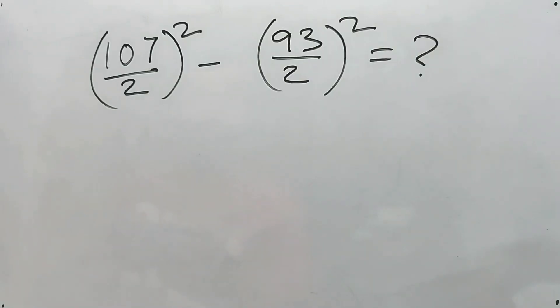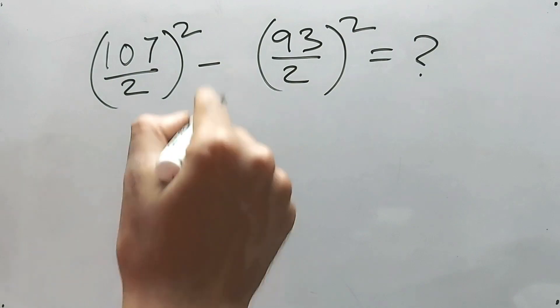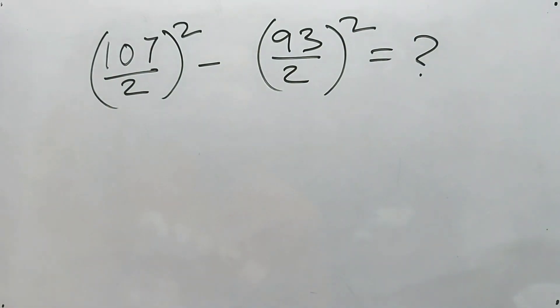Hi guys, this is Arindam. You're watching Brain Development. So, (107/2)² minus (93/2)² is equal to what? We'll have to find the value of this.